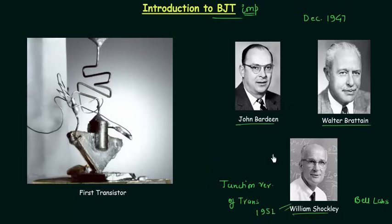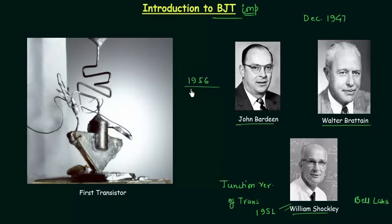They received the Nobel Prize in 1956 for the invention of the transistor. John Bardeen is the only physicist who received the Nobel Prize in Physics twice — the first one in 1956 for the transistor, and the second one in 1972 for BCS theory.